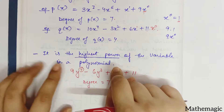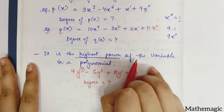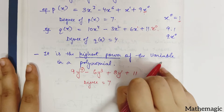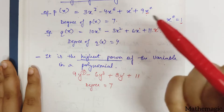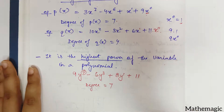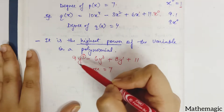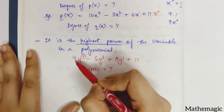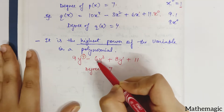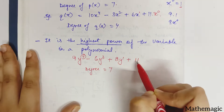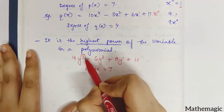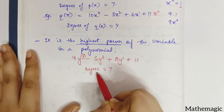So the definition: the degree of a polynomial is the highest power of the variable — the variable's highest power is called the degree of the polynomial. Let's take one more example: 9y to the power 7 minus 6y cubed plus 8y plus 11. What is the greatest power? 7. So 7 is the degree.